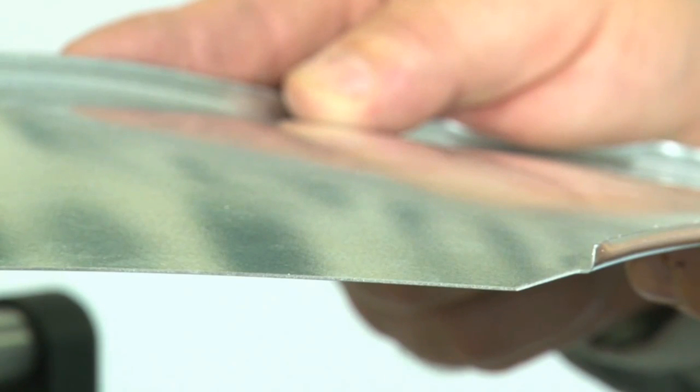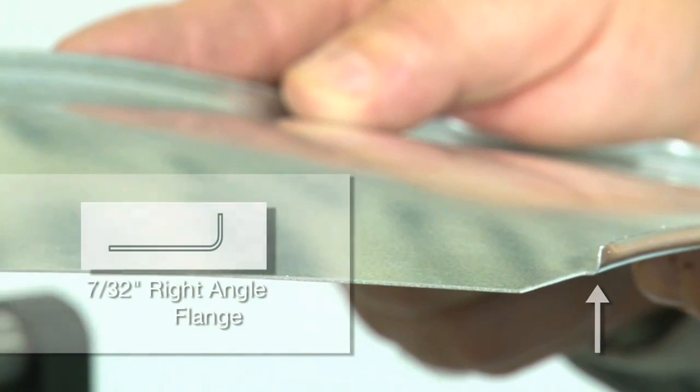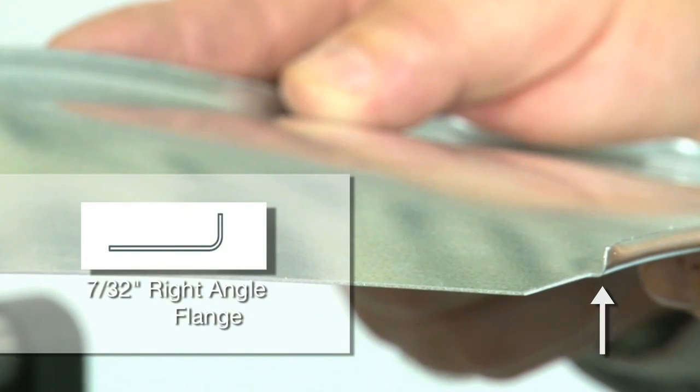This unit is designed to form a 7/32nd right angle flange for all rounded edges. The operator will now demonstrate.